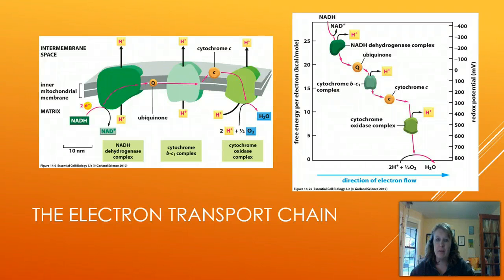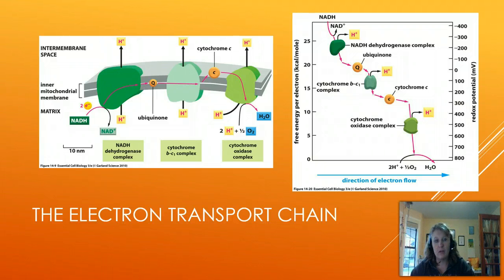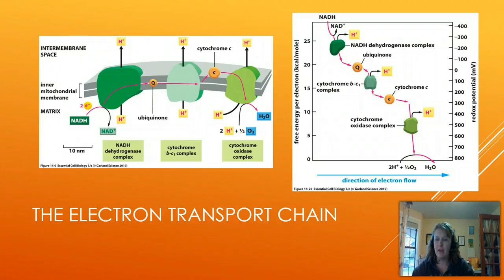Now let's look in more depth at the electron transport chain, sometimes called the respiratory chain. We have a few main protein complexes with shuttling complexes between them. NADH will enter the process and dump its electrons — and protons if it's carrying them — at the NADH dehydrogenase complex. This first complex takes the electron and shuttles it around within the protein using metal ions that bounce the electron across, causing a redox reaction to occur. By harnessing this redox potential, a little bit of that energy is siphoned off. The electron is then passed to ubiquinone, represented as Q.